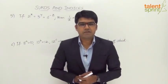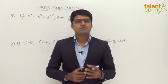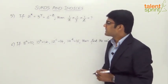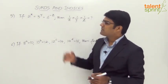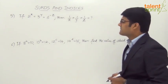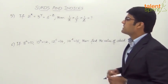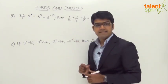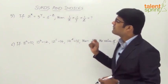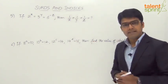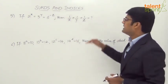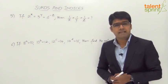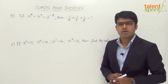Let us now look at the next set of questions from this topic of surds and indices. Here we have question number 5 and 6. Question 5 says: if 2^x equals 3^y equals 6^(-z), then 1/x + 1/y + 1/z is equal to what?